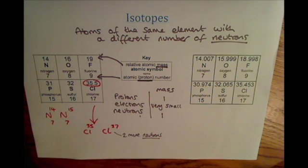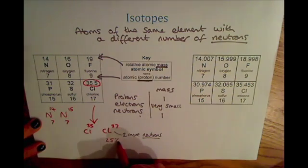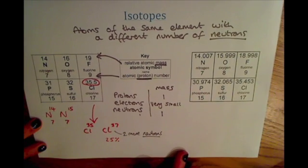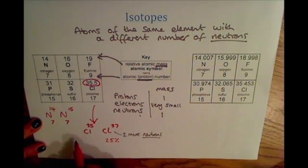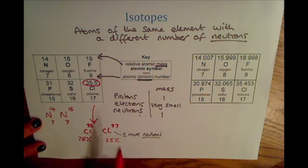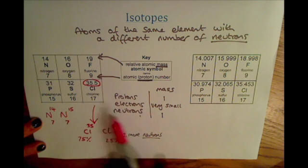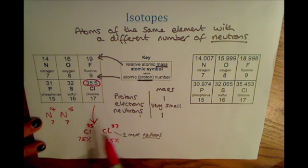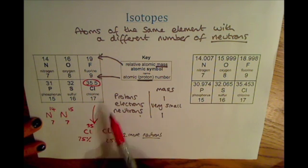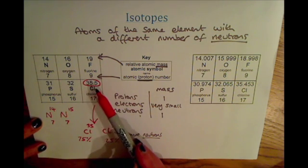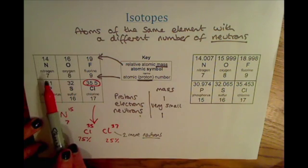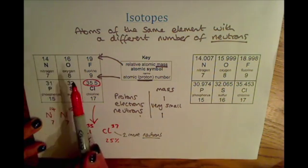In nature, about 25% of chlorine exists as chlorine-37, and the remaining 75% is chlorine-35. The reason you get a decimal here is because it's the relative atomic mass, which takes into account the average of all chlorine atoms found on Earth. So with 75% of chlorine-35 and 25% of chlorine-37, the relative atomic mass comes out at 35.5. On your periodic table the numbers have been rounded to make things a little easier.